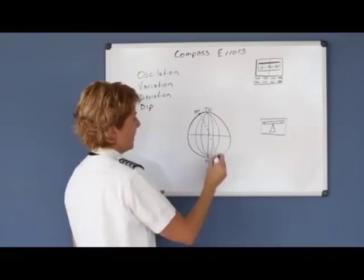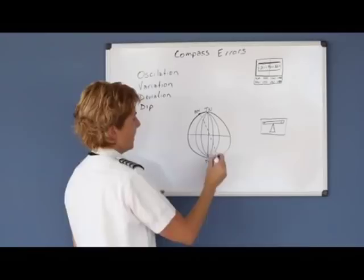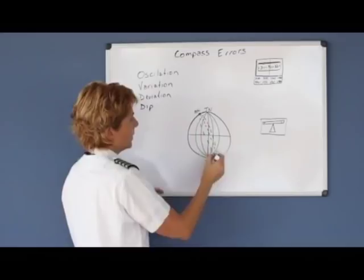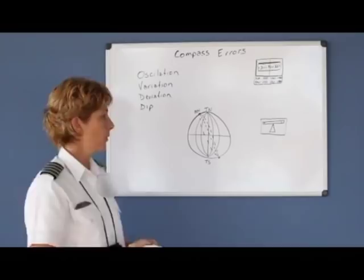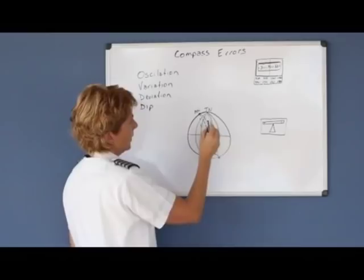On your sectional chart, they have these magenta-colored dashed lines that represent the variation required that you have to correct for when you're doing your cross-country flight planning. If we follow just this north line right here, and let's say that this was the north line of your true north, you could see...